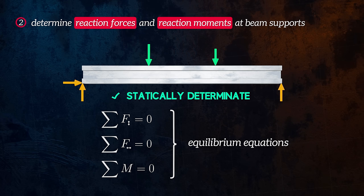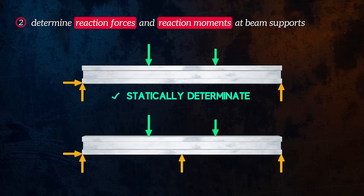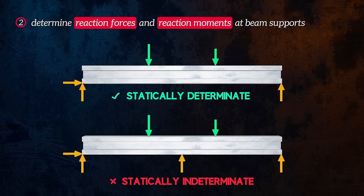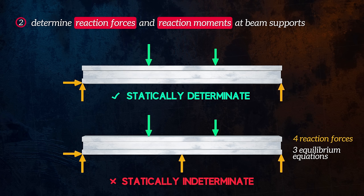For some beam configurations, we won't be able to calculate all of the reaction loads because we have too many unknowns and not enough equilibrium equations. In this case, the beam is said to be statically indeterminate. This beam has four reaction forces, but we only have three equilibrium equations. To solve this beam, we would need to use slightly more complicated methods and consider boundary conditions. In this video, I will only cover statically determinate cases, where we can use the equilibrium equations to calculate all of the reaction loads.